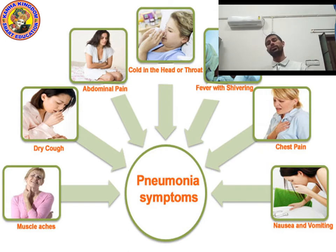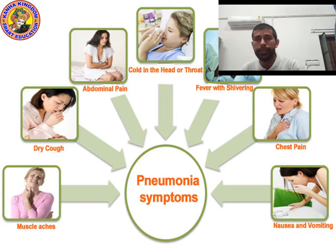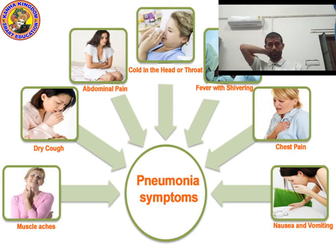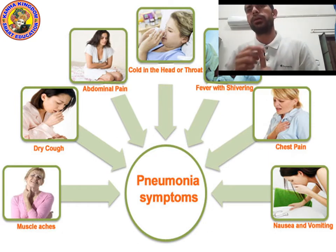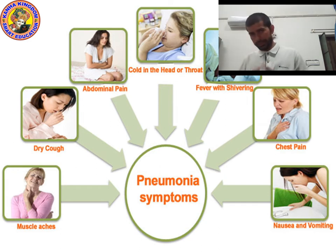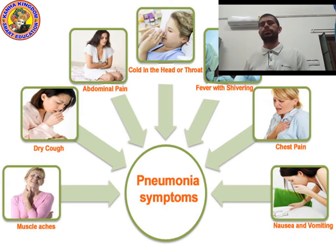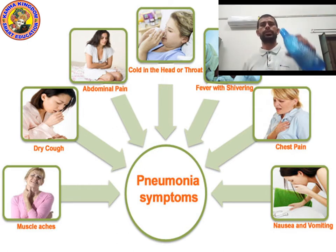Third symptom: abdominal pain — A-B-D-O-M-I-N-A-L — meaning stomach pain or stomachache. Fourth: cold in the head or throat. Fifth: fever with shivering — you will have fever along with shivering, meaning your body will start vibrating. Sixth: chest pain — your chest will be in pain because the disease is affecting your lungs.